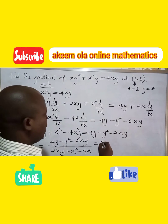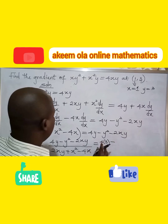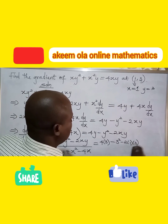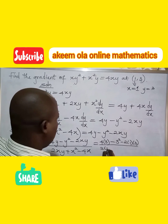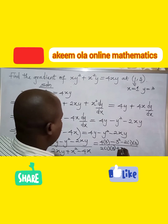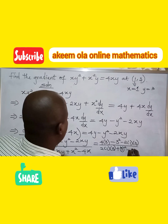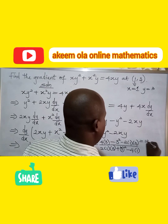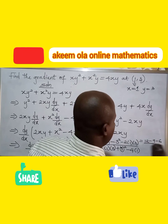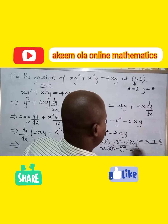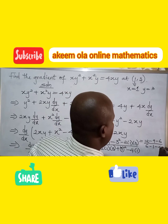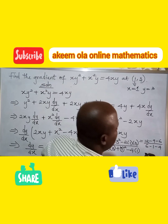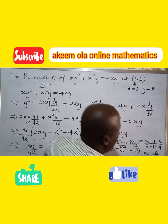Substituting x equals 1 and y equals 3: the numerator is 4 times 3 minus 3 squared minus 2 times 1 times 3, which gives 12 minus 9 minus 6, equal to negative 3. The denominator is 2 times 1 times 3 plus 1 squared minus 4 times 1, which gives 6 plus 1 minus 4, equal to 1.